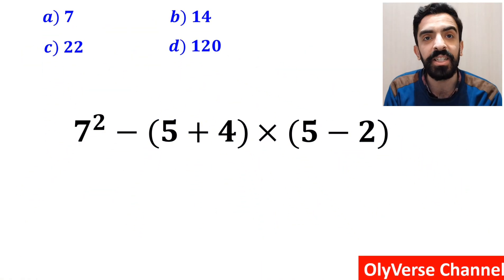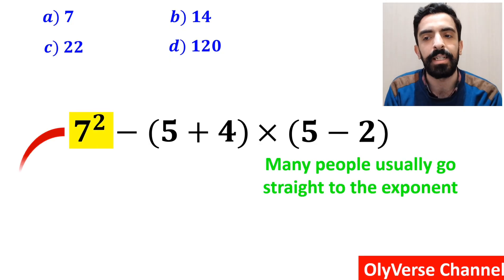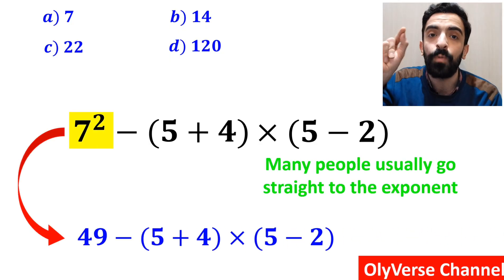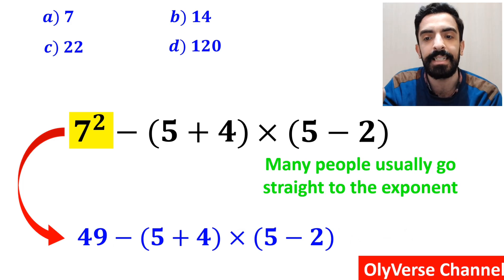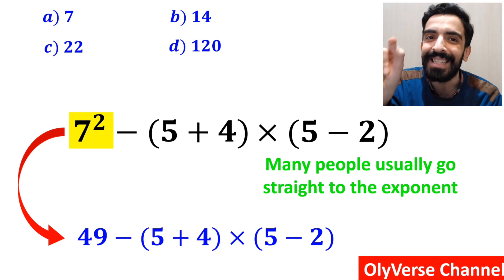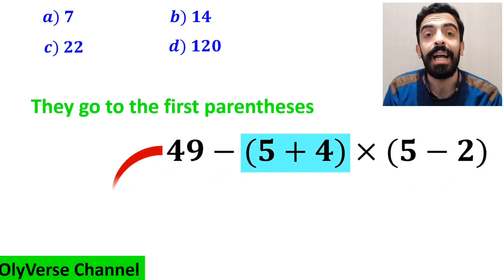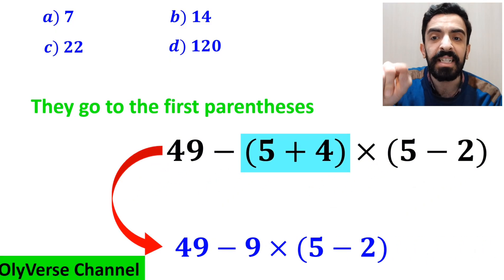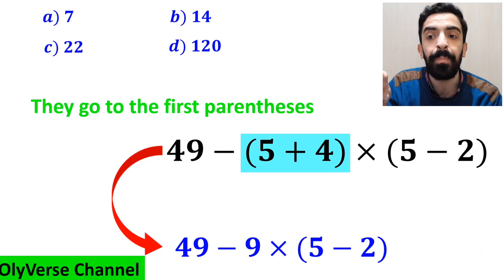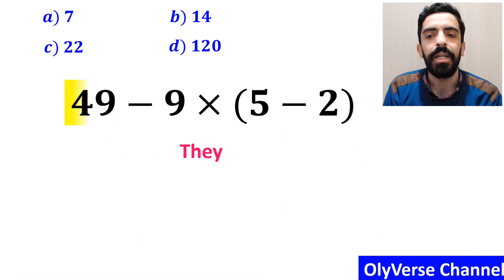In the first step to solve this question, many people usually go straight to the exponent and write the whole expression as 49 minus (5 plus 4) multiplied by (5 minus 2). Then they go to the first parenthesis and instead of that expression, they write 49 minus 9 multiplied by (5 minus 2).